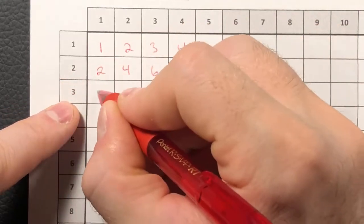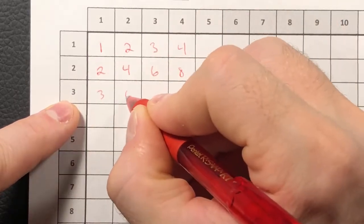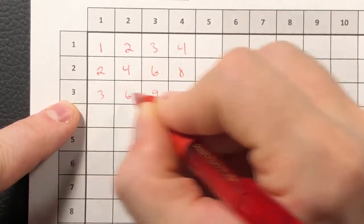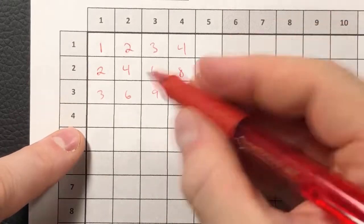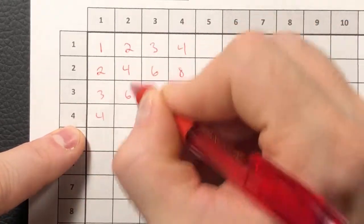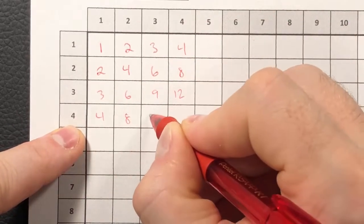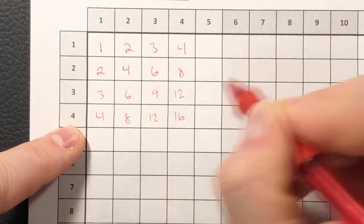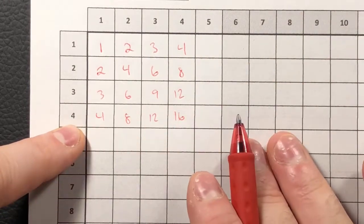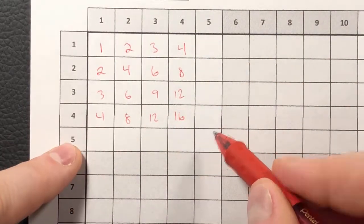If I did the 3s, 3 by 1, 3 by 2, 3 by 3, 3 by 4. If I did 4s, 4 by 1, 4 by 2, 4 by 3, 4 by 4. And then no matter what part of the table, if I were to jump to here, it's 5 by 5.